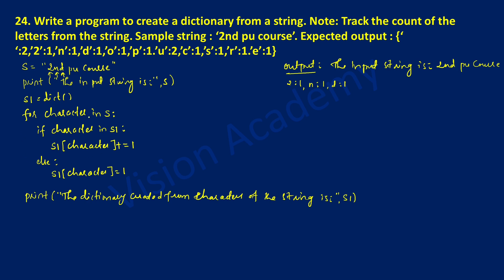Control transfers to the next character, which is a blank space. If blank space in s1 — there was no blank space previously, so else part executes and blank space is set to one. Next character is 'p': not present previously, so 'p' is set to one. Next is lowercase 'u': not available previously, so 'u' is set to one.